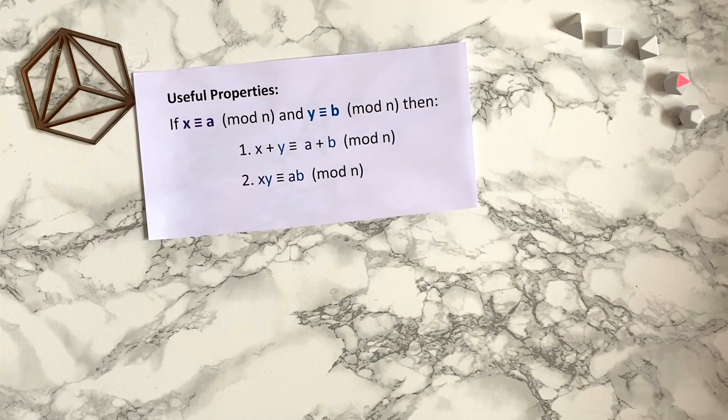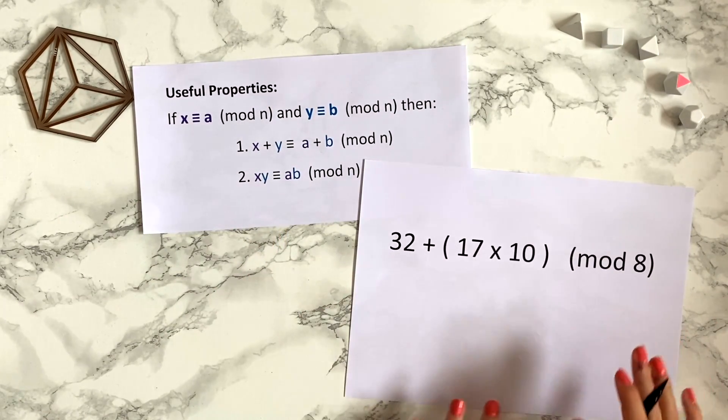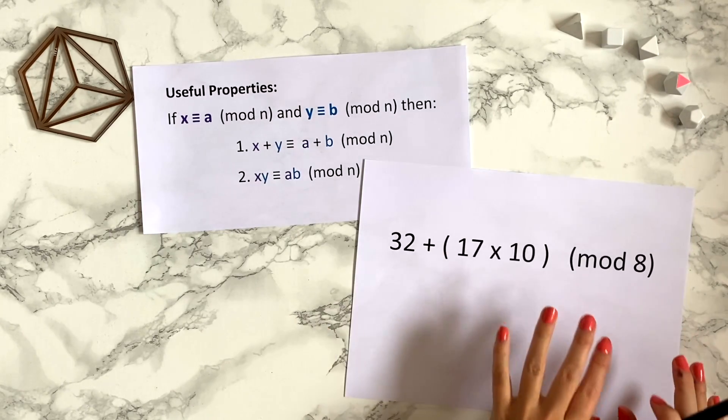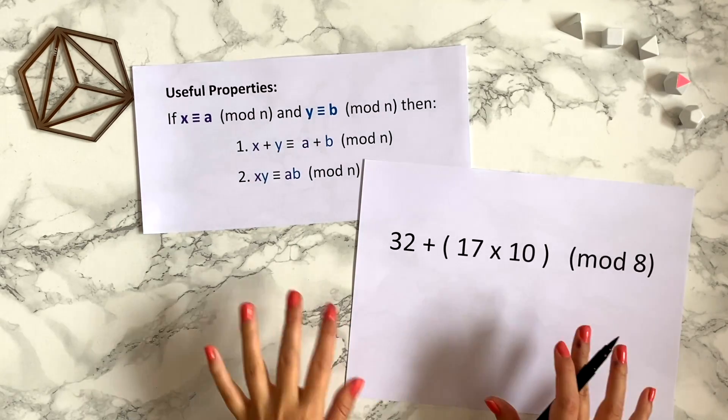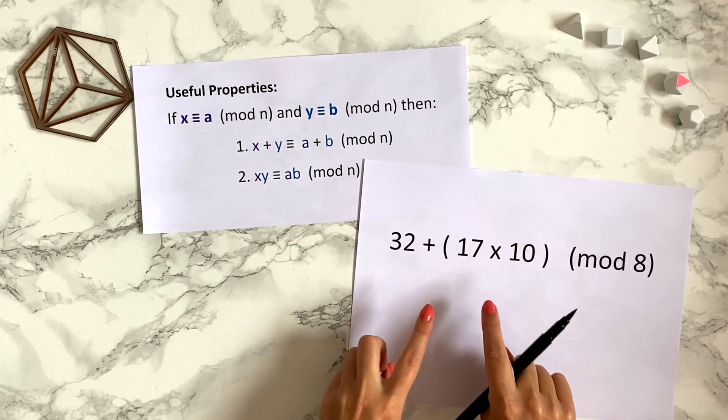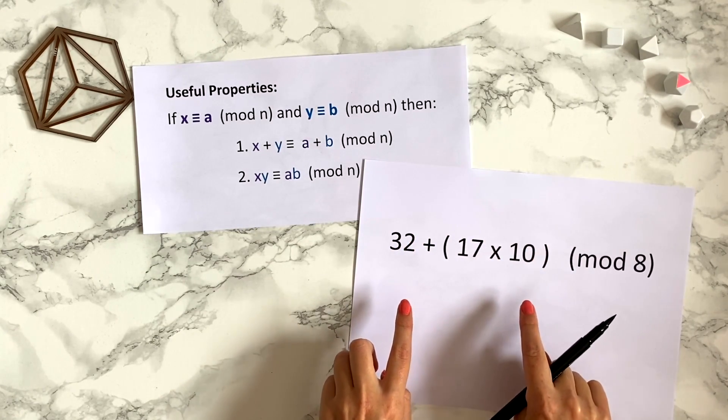Let's try a final calculation using this theorem. So we want to calculate this modulo 8, and if we were to actually perform this calculation first before reducing it modulo 8, that would be quite a lot of work. Now what this theorem tells us is that we don't need to perform this big calculation first. We can instead work out what each of these components are modulo 8.